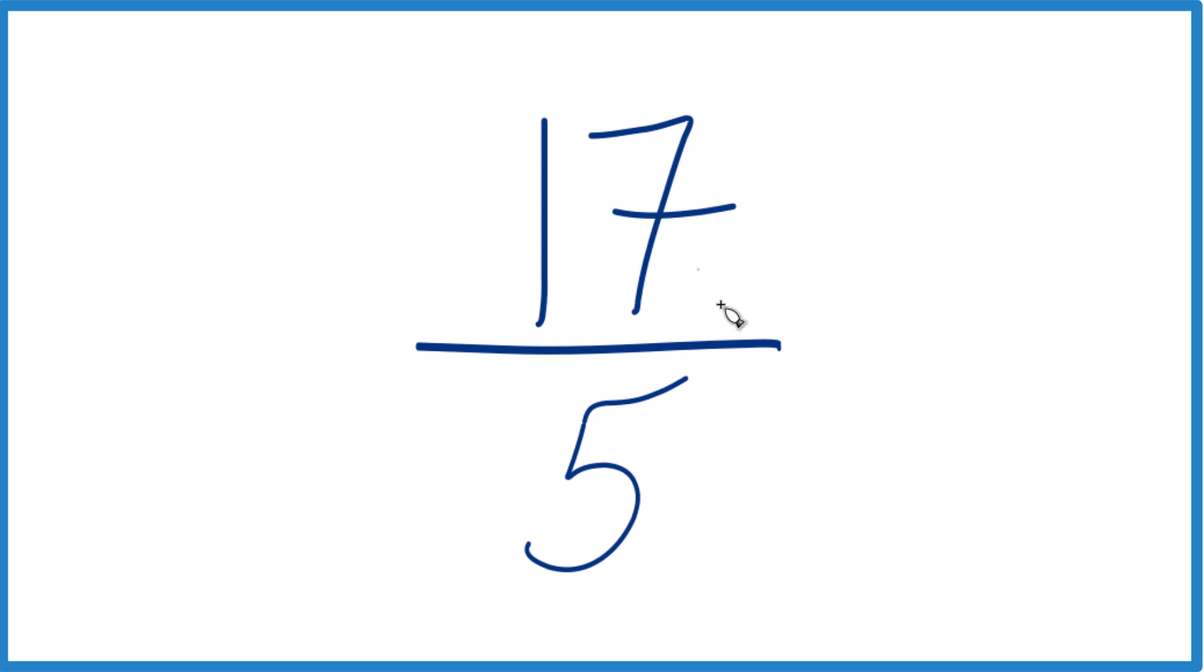So if we look at that, the only number that goes into 17 and 5 evenly is 1. And if we divide 17 by 1 and then 5 by 1, that common factor, we get 17 fifths. So it's already simplified. It's in lowest terms. We can take and change this to a mixed number.